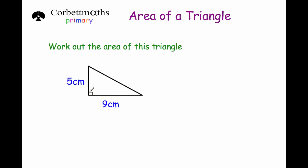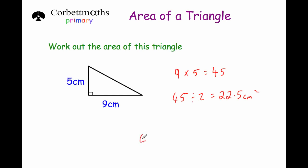This time we've got a base of nine and a height of five. So we're going to do nine times five which is 45, and now divide that by two. 40 divided by two is 20 and five divided by two is 2.5, so that would be 22.5 centimetres squared. You could also use the bus shelter method of short division: two into four goes twice, two into five goes twice remainder one, and two into ten goes five times. But it might just be easier to mentally halve it if you can.